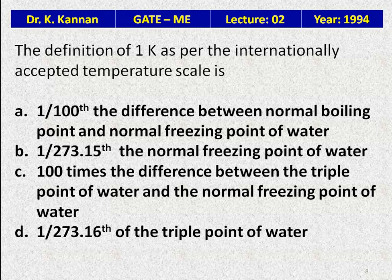The definition of 1 K as per the internationally accepted temperature scale is: 1/100 of the difference between normal boiling and normal freezing point of water, 1/273.15 of the normal freezing point of water, 100 times the difference between triple point and freezing point of water, or 1/273.16 of the triple point of water. The correct answer is 1/273.16 of the triple point of water.